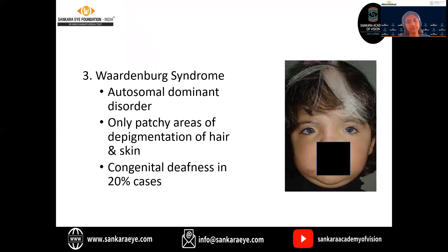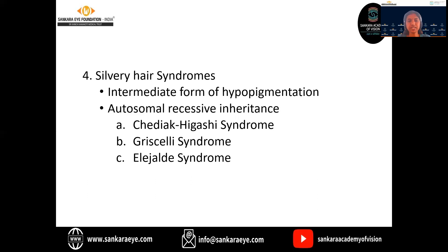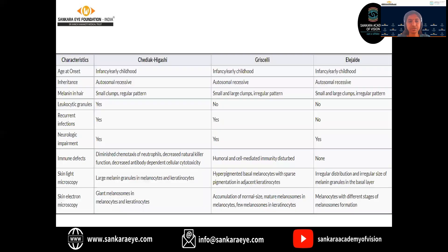Waardenburg syndrome is an autosomal dominant disorder. As shown in this picture, there will be patchy areas of hypopigmentation of the hair and the skin. Congenital deafness is found in 20% of cases. Silvery hair syndrome is an intermediate form of hypopigmentation and is also an autosomal recessive condition. Under this comes the Chediak-Higashi syndrome, Griscelli syndrome, and the Elejalde syndrome. The Chediak-Higashi and the Griscelli syndrome both have children with recurrent infections because of inherited immune defects. All three syndromes have neurological impairment too.